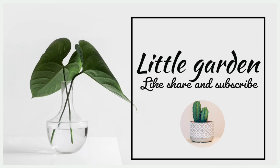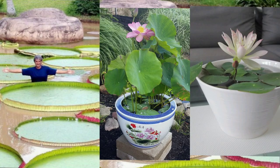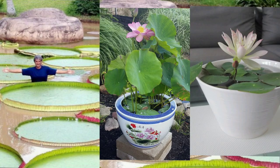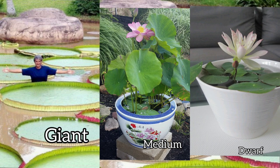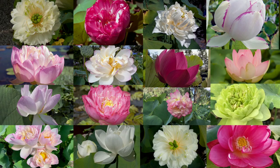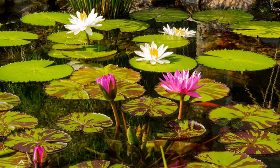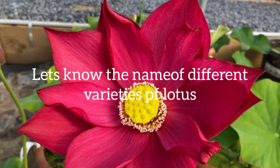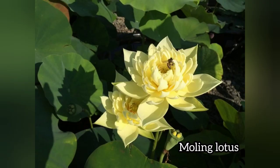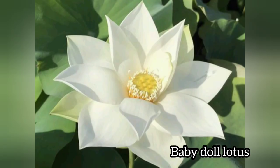Welcome to my channel, Little Garden. By size, there are three main types of lotus: giant, medium, and dwarf. But by colors there are many, many uncountable varieties. We are talking about lotus, not water lilies — they are very different plants. So here are some different varieties by colors, like red flame lotus and malyang lotus.